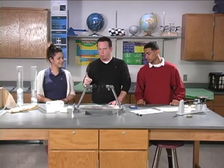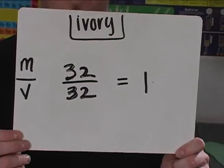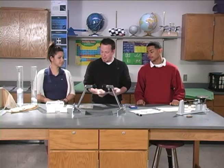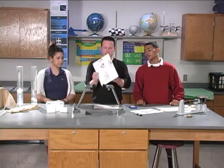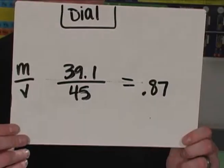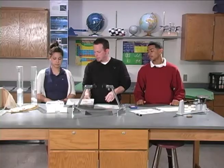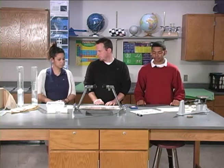Mercedes, you told us the density of water was one. Well, ivory soap has the exact same density. So technically it might float, but then we have dial soap which sank, and its density is supposed to be less than water. So there's got to be another reason why these float. Any more ideas? Nope.